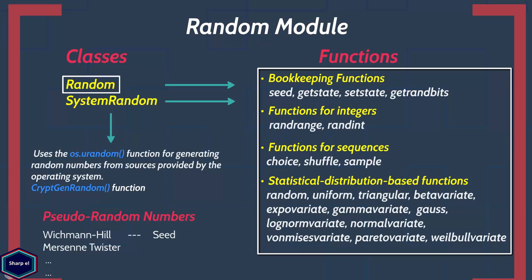However, you can create your own instances of the random class by calling the random class constructor. The advantage of having your own instance of random class is that the instance doesn't share the state, and it is useful if you require random numbers in multiple threads.